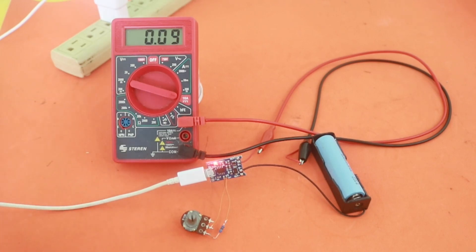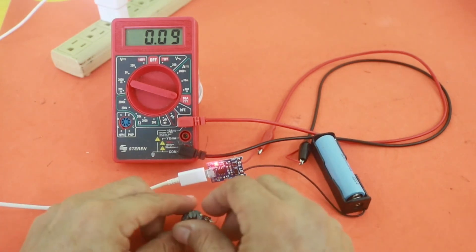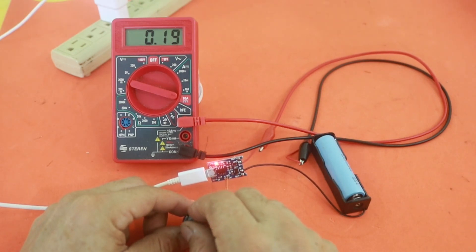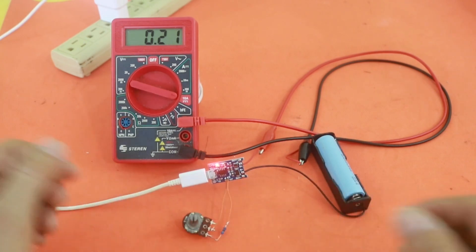Here for example is 0.09 amps or 90 milliamps. We can set to another value, 200 milliamps for example depending on the size of your battery.